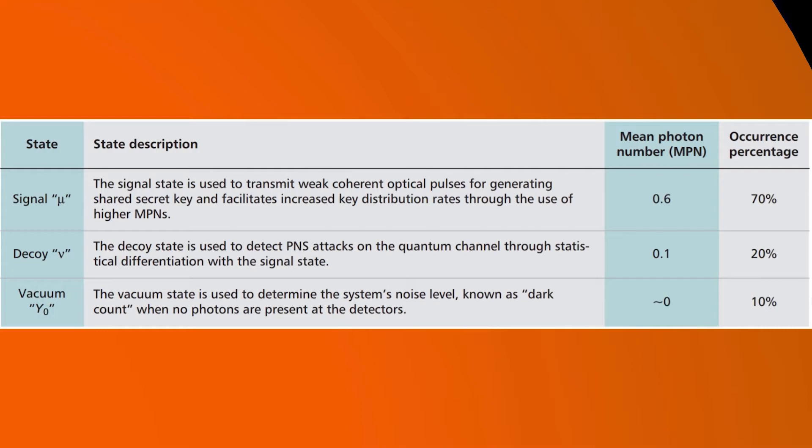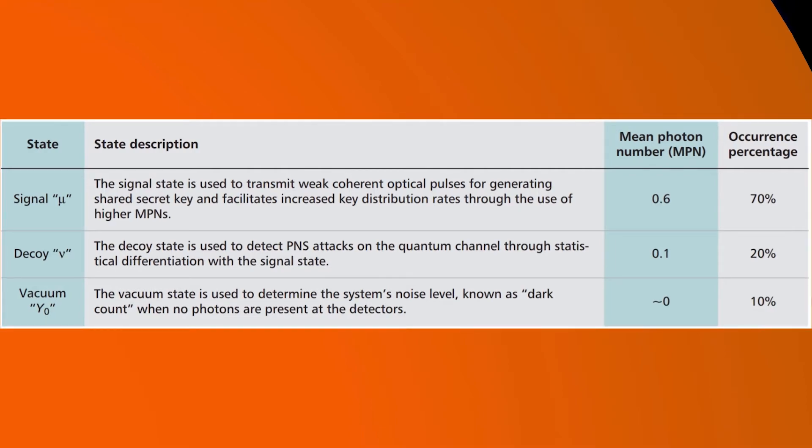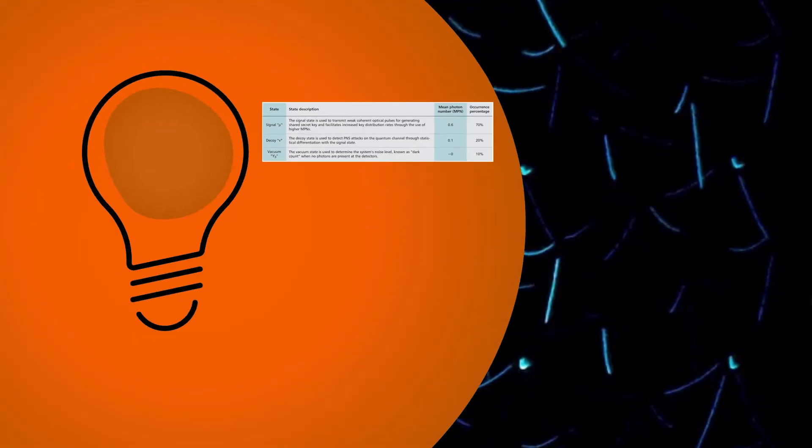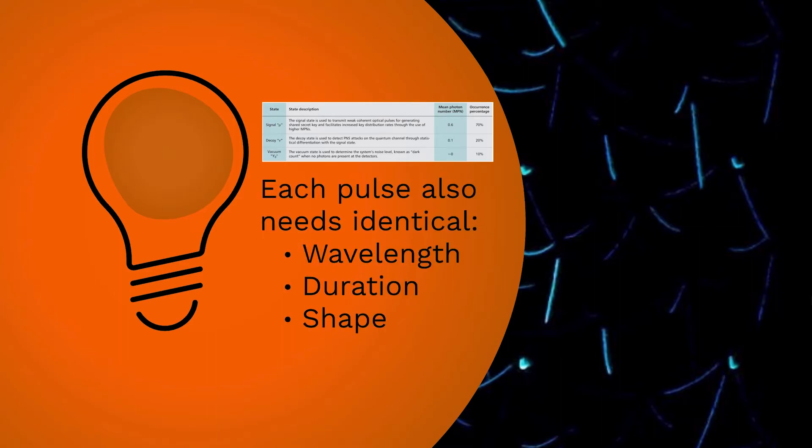The vacuum state is transmitted 10% of the time with an MPN of approximately 0. In order to maintain integrity of the protocol, each pulse must have identical characteristics, for example, wavelength, duration, and shape, other than the MPN, such that Eve cannot distinguish a decoy state from a signal or vacuum state.